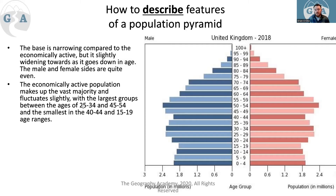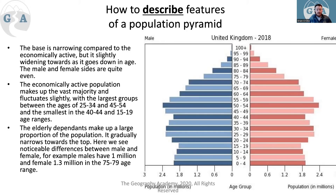When using population pyramids, it's good to use the actual statistics. For example: the largest groups are between 25-34 and 45-54. That shows the examiner you can read the statistics. Dependents make up a large portion and it gradually narrows toward the top. A strong point is noting a specific gender comparison - males have 1 million and females have 1.3 million in the 75-79 age range - using direct comparison, shape description, and specific age ranges with calculated population figures.